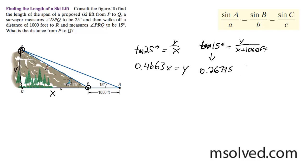And then what I'm going to do is I'm going to distribute this denominator, so it's going to be X, and then I get plus 267.95 is equal to Y, but I'm going to substitute X in for Y, so I get 0.46633X. So I'm going to subtract X from there.